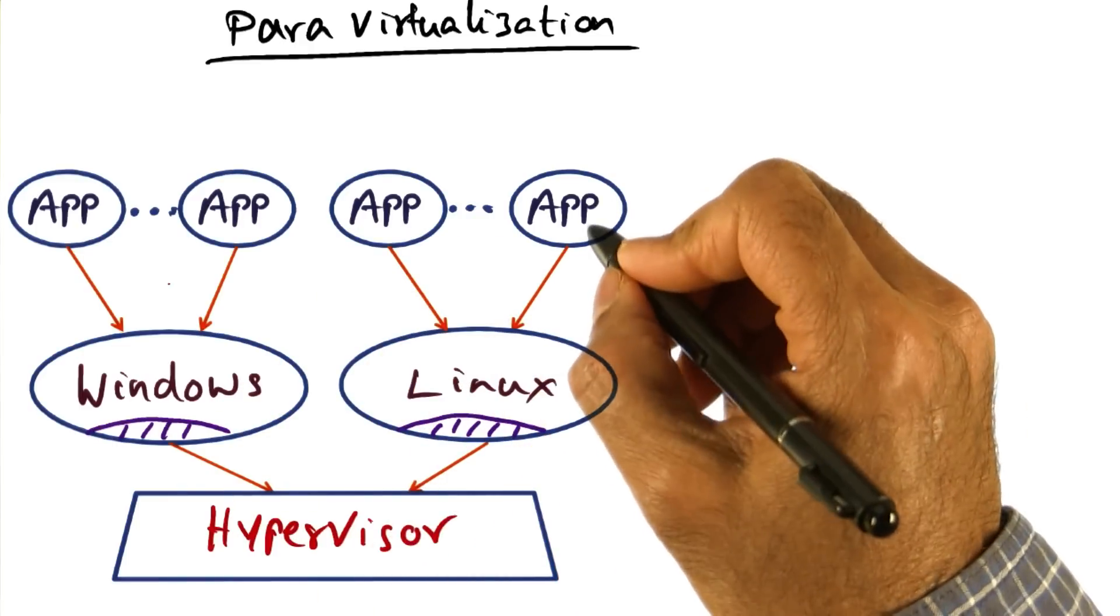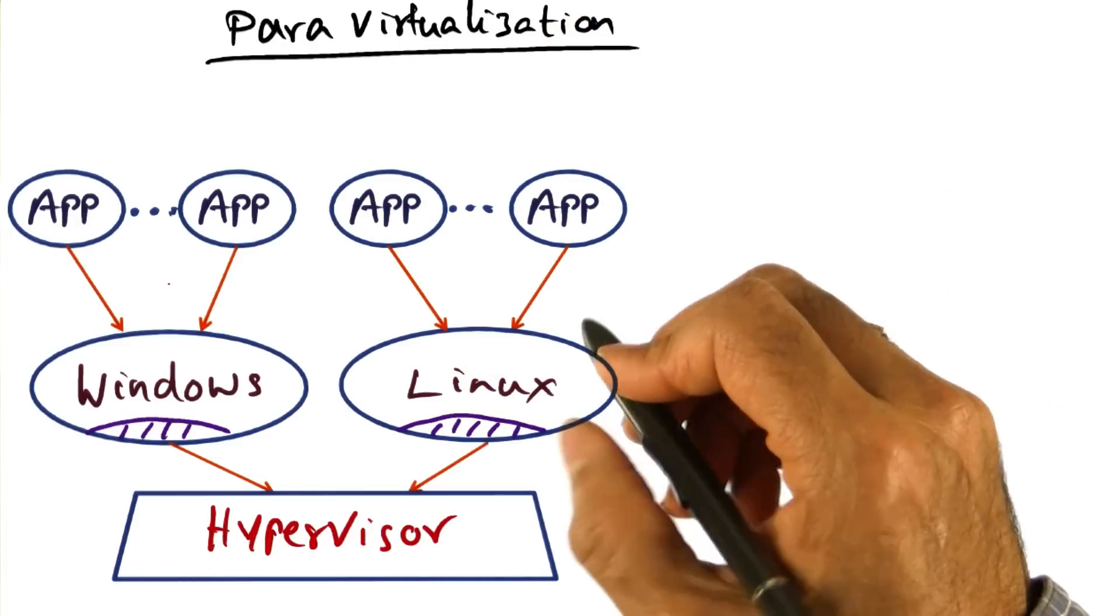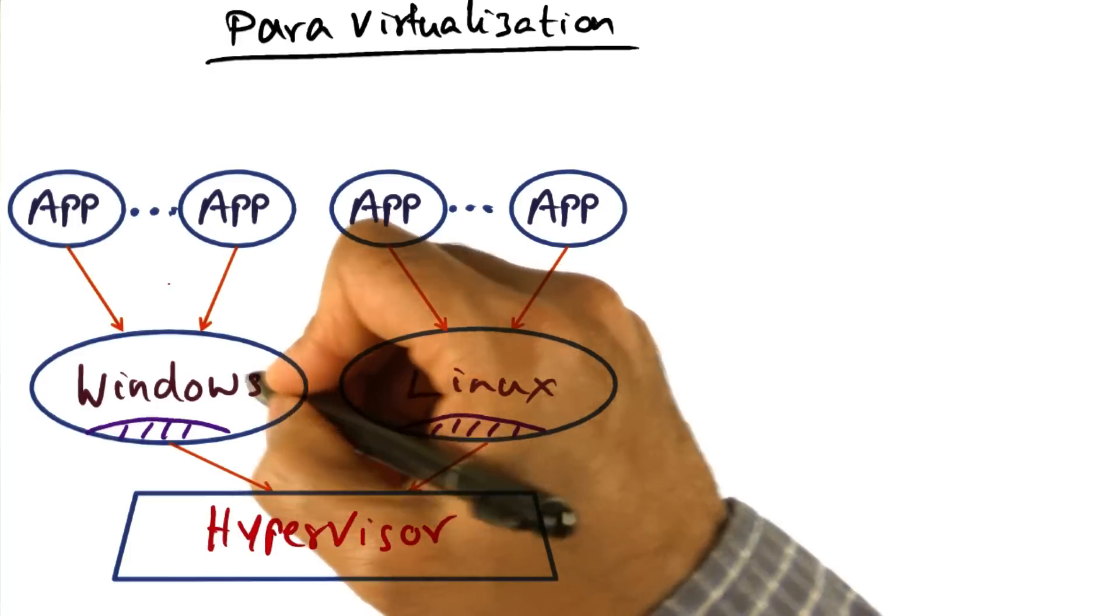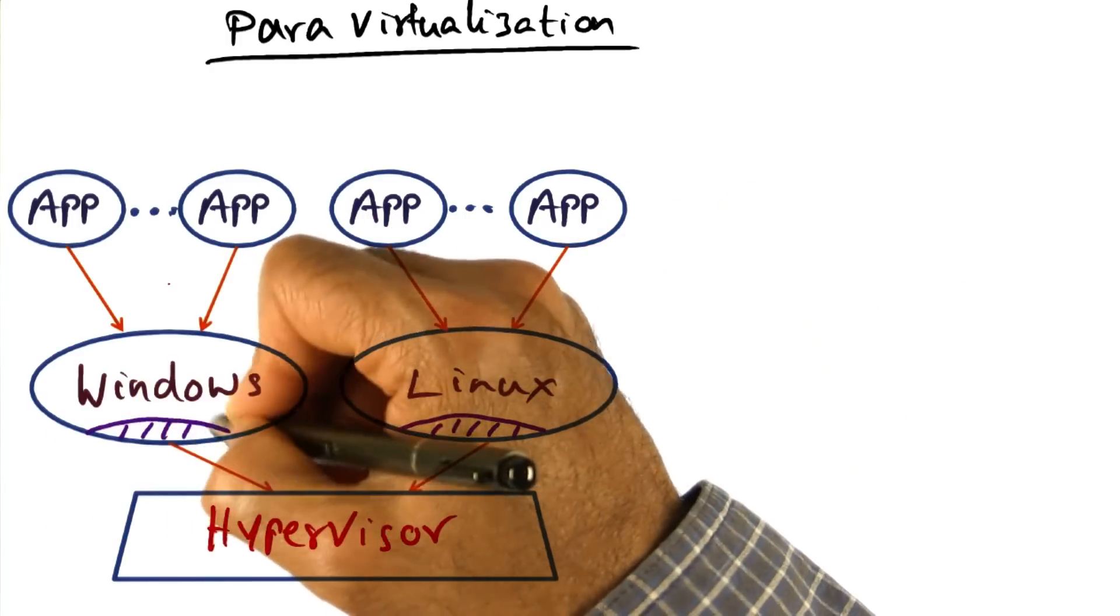The Xen product family uses this para-virtualization approach. Now this brings up an interesting question. I said that in order to do this para-virtualization, we have to modify the operating system, but how big is this modification?